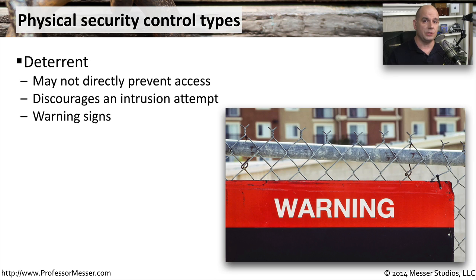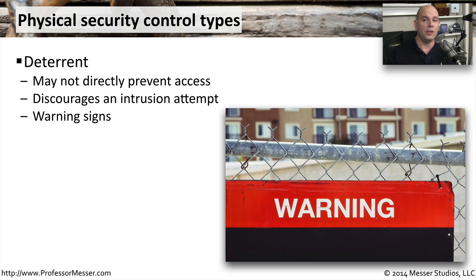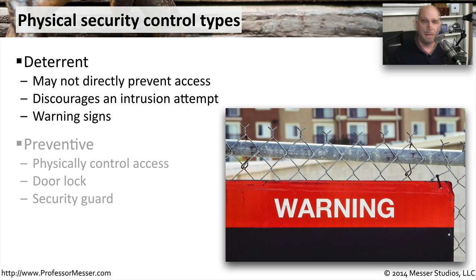When talking about physical security, there are a number of different control types that might apply. One is a deterrent. A deterrent doesn't necessarily keep anyone out of a particular area or prevent access, but it does discourage them from going into a room or gaining access. Maybe this is something like a warning sign that tells someone they probably should not be gaining access, or that a particular area is for authorized personnel only. There may not be a lock on the door, but it may make people think twice before entering.